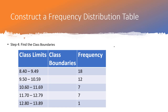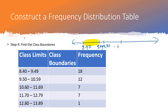We'll start with class boundaries. If we draw a number line and place our class limits on it, the first class runs from 8.40 to 9.49, the second class from 9.50 to 10.59, and the third class from 10.60 to 11.69, continuing for all five classes. The point of class boundaries is that frequency distribution tables for continuous data show a gap between classes — there should be no gap, and that's what class boundaries handle.